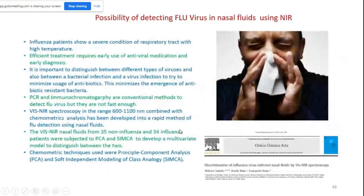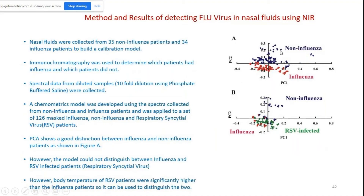Nervascan with chemometrics can also detect viral diseases using PCA and PLS models. In one study, nasal fluid samples from many patients — already identified as influenza or non-influenza — were measured by near IR spectroscopy. PCA analysis could distinguish between non-influenza and influenza samples. However, it could not separate influenza from RSV — respiratory syncytial virus. Sometimes the PCA model works, and sometimes it doesn't.